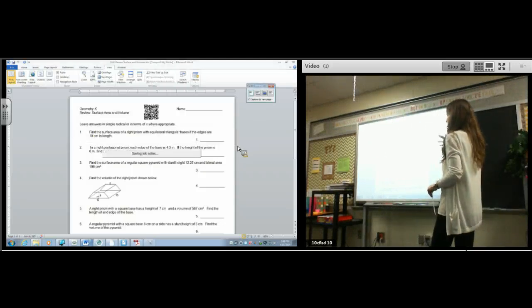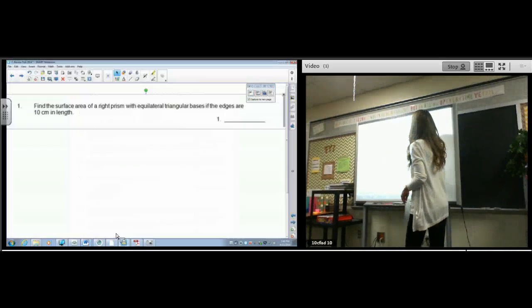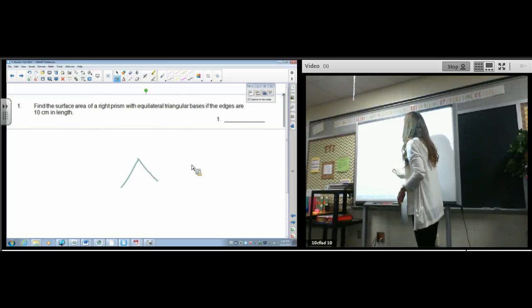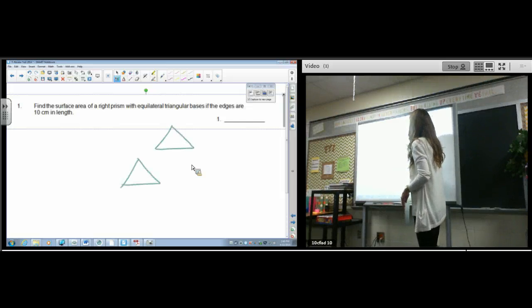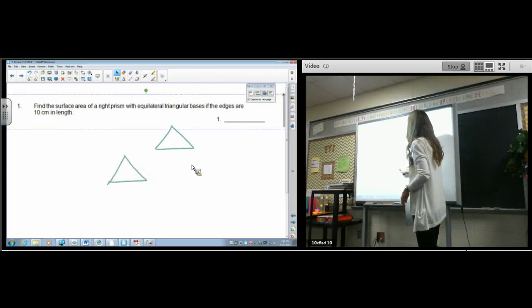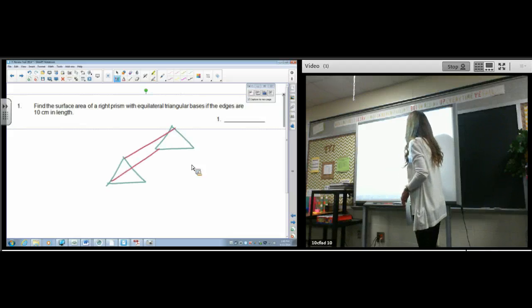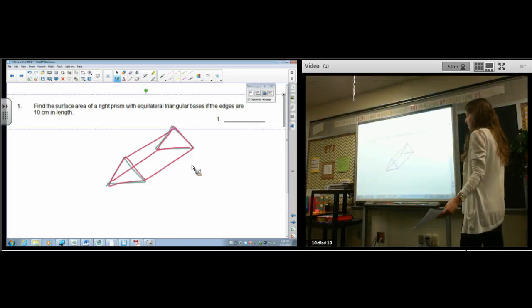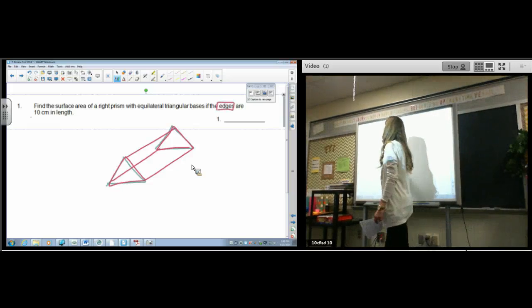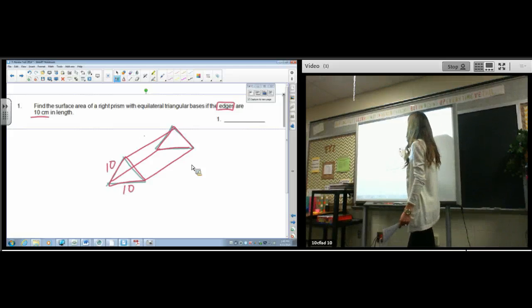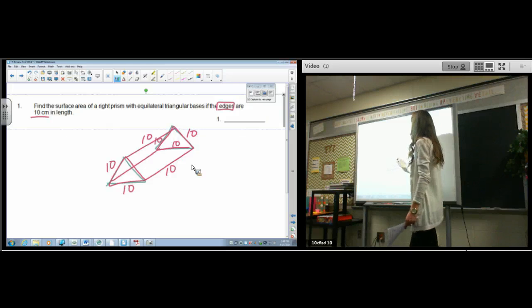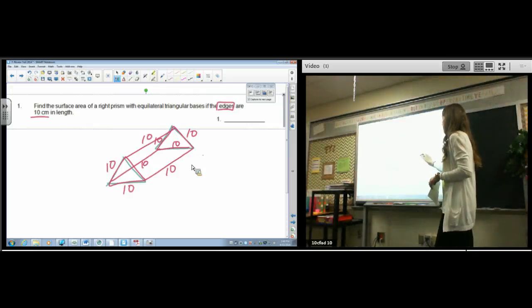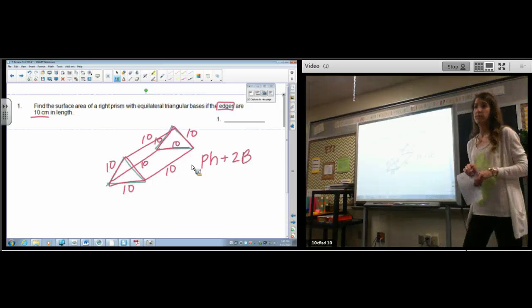So we're going to look at number 1. A lot of people just didn't understand what it meant on number 1 when it said that each edge is 10. So I bet if you knew what it meant you would be able to solve it perfectly fine. So we've got equilateral triangular bases. So you draw an equilateral triangle, you draw an equilateral triangle, and then connect them. So there's what your prism looks like. And my picture is deceiving because every edge of the figure, the edges, all the edges are 10 centimeters. So anytime you see a segment, anytime you see an edge, it's all 10.